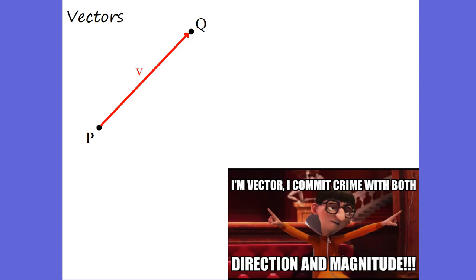Vectors are super easy. I actually think we should be doing vectors in elementary school, because they're that easy. What is a vector? A vector is something that has a magnitude and a direction. If you remember back to physics, vectors like velocity, displacement, force, acceleration, momentum — these are all vectors. They have magnitude, which is a fancy word for number, and a direction, an angle as well.